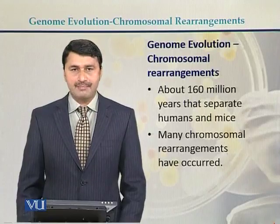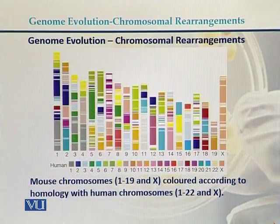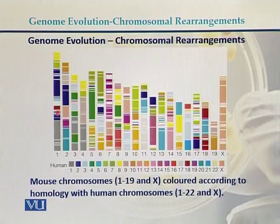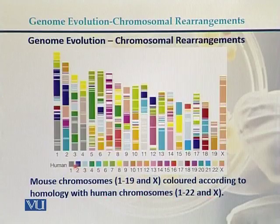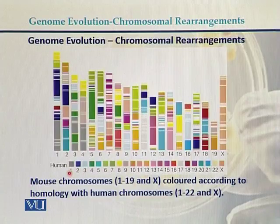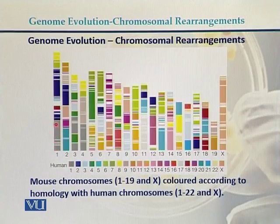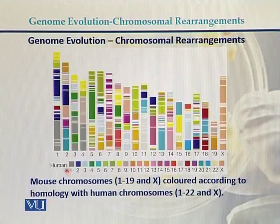Many chromosomal rearrangements have occurred in the past. Here is a diagram where we can do a comparison between the human genome and the genome of the mouse. These are the chromosomes of mouse, from 1 up to 19 and the X chromosome, compared according to homology with human chromosomes 1 to 20 and X. For chromosome number 1 of humans, we can see that this color matches with mouse chromosome 1, then with chromosome 3 and with chromosome 4. So human chromosome 1 has homology with mouse chromosomes 1, 3, and 4.